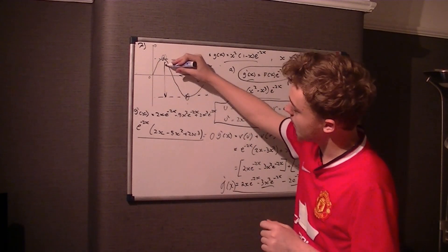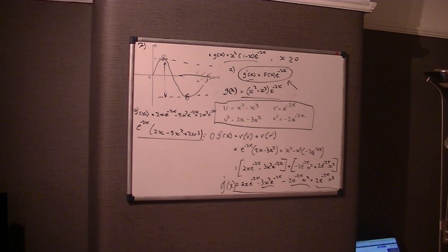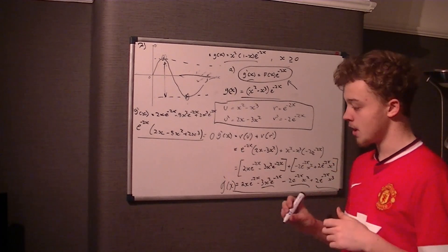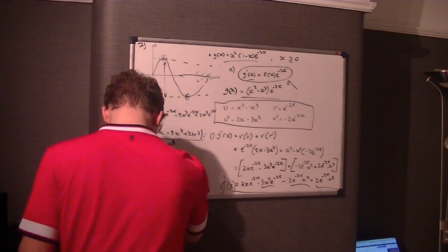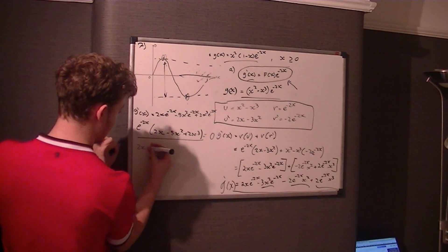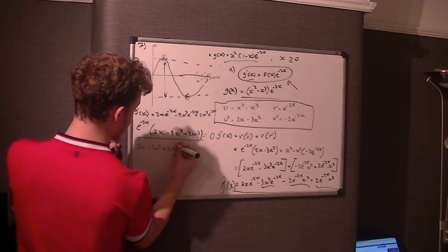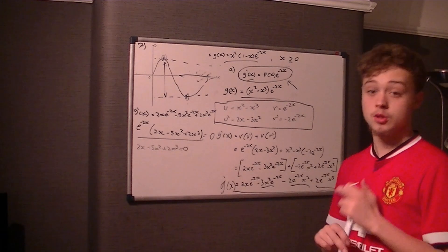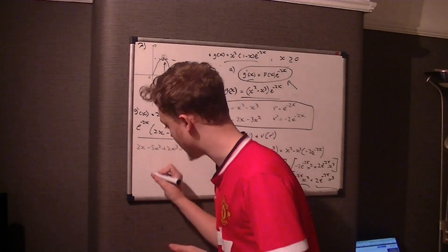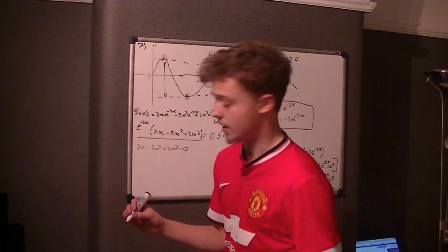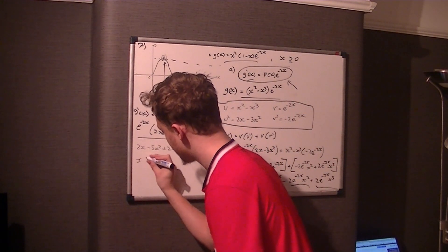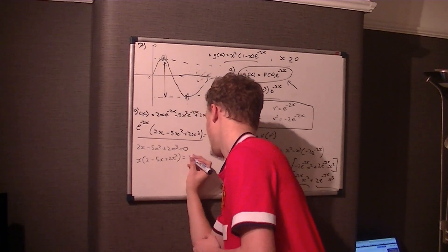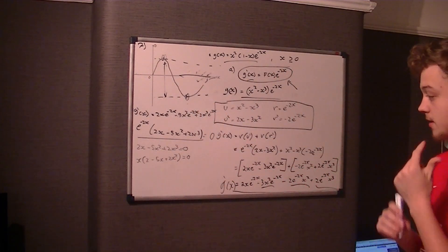So we make the function equal to zero. That immediately gets rid of the e to the negative 2x. So therefore we're left with 2x take 5x squared plus 2x cubed equal to zero. But it's very hard to solve for cubics. One of the main ways we have at A level of solving cubics is to take out x as a common factor. And because we've not got plus 7 or whatever, we can do that. So x times, I'll write it as x times 2x squared take 5x plus 2.